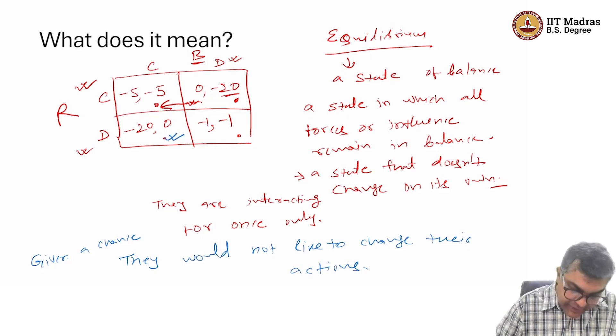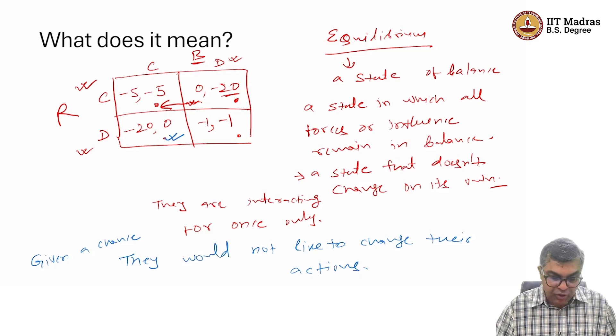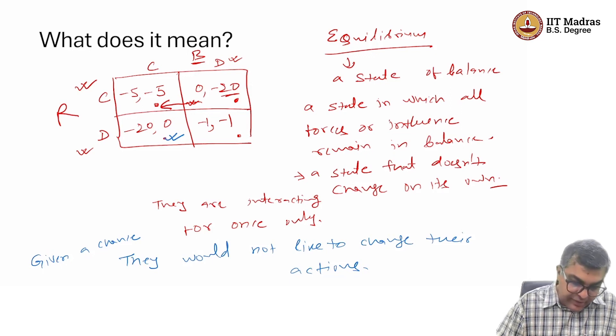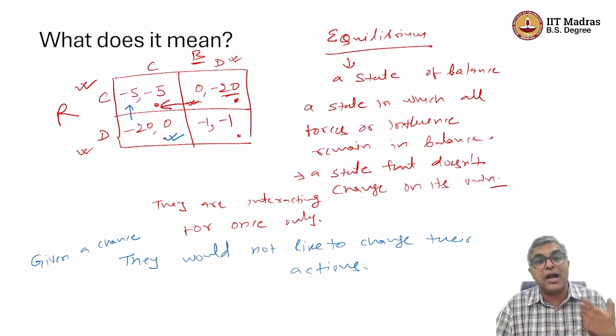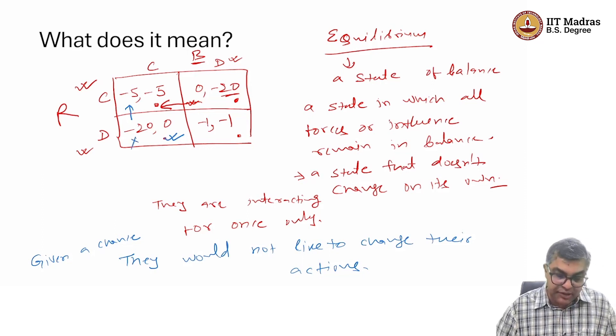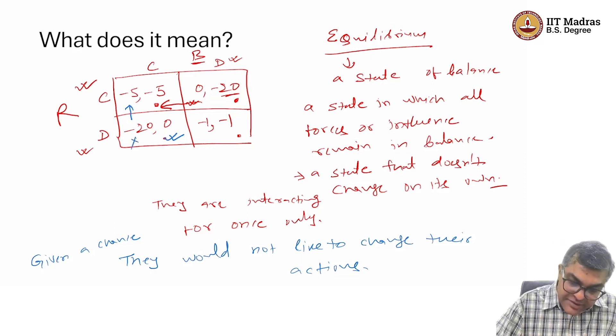Let us say, if they are here, minus 20 comma 0, Ranga is getting 20 years of jail, Billa is going to walk free here. Ranga would like to, given a chance, Ranga would think, oh, Billa is going to confess. So, I am better off here confessing. So, this cannot be such equilibrium.